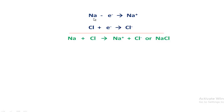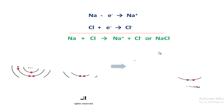The electronic configuration of sodium is 2-8-1, so it easily releases one electron and is converted into sodium positive ion. The electronic configuration of chlorine is 2-8-7, so it easily accepts one electron released by sodium and forms chloride ion. Balancing the electrons, we can write: sodium + chlorine → sodium ion + chloride ion, which forms the sodium chloride molecule.